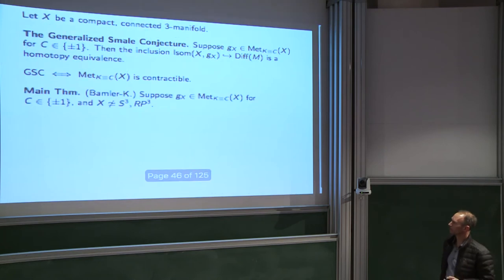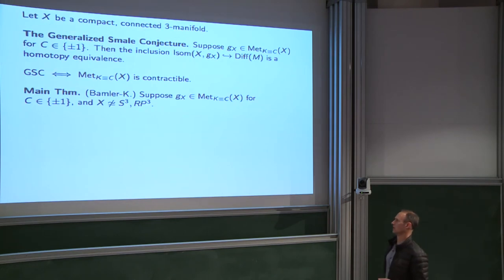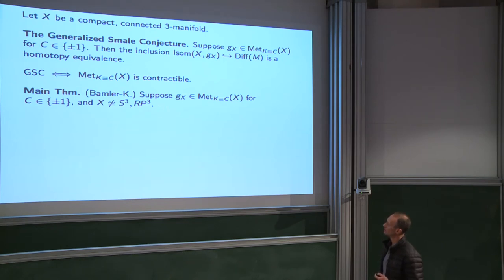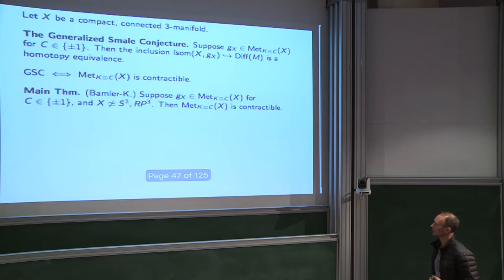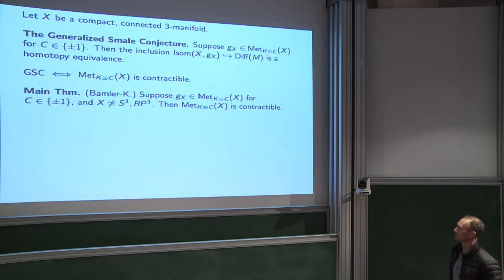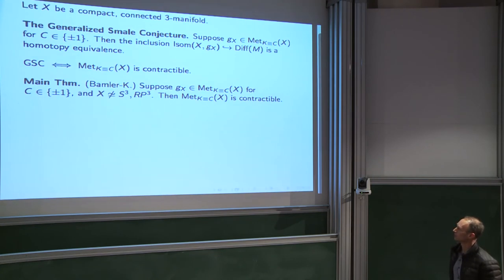Just as we had equivalent statements for the 3-sphere, the generalized Smale conjecture is equivalent to contractibility of the space of constant curvature metrics. The main theorem I'm going to discuss today — joint work with Richard Bamler — uses the same setup: a metric of constant curvature C = ±1, excluding the cases when X is the 3-sphere or RP³. Then the space of curvature-C metrics is contractible.